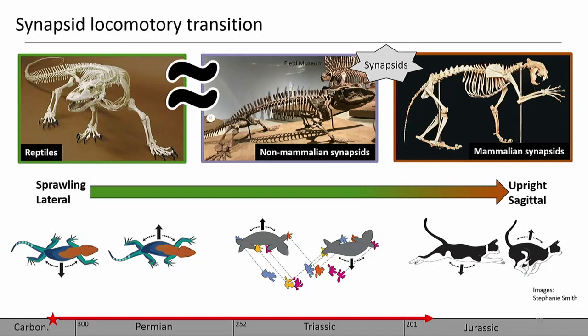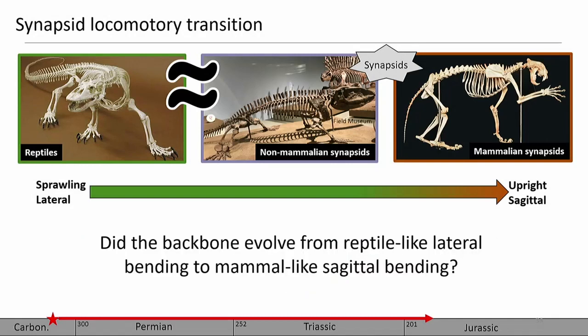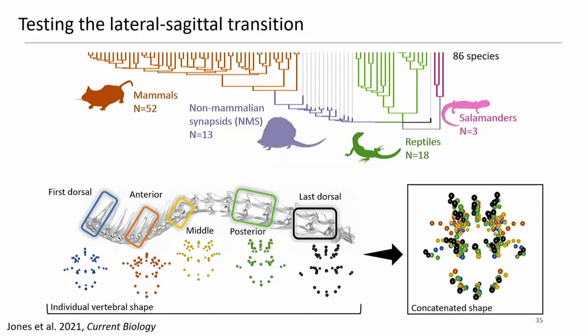The sprawling-to-upright limb transition in mammals has been a topic of intense investigation for almost a century, but the lateral-to-sagittal transition in the backbone has pretty much been neglected and hasn't been quantitatively tested until now. So we asked: did the mammalian backbone evolve from reptile-like lateral bending to mammal-like sagittal bending — was there a simple one-to-one trade-off? We used functional adaptive landscape analysis to find out.